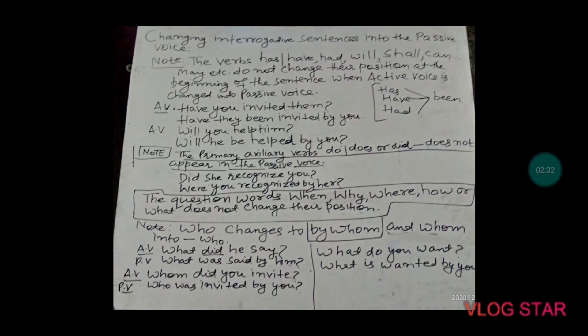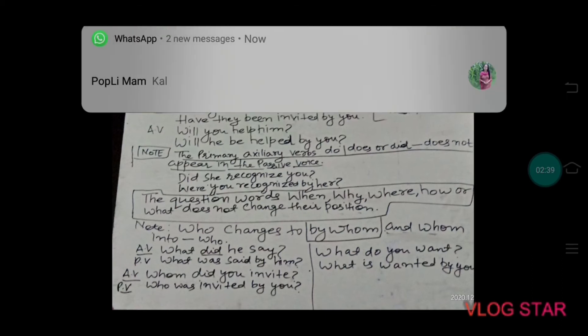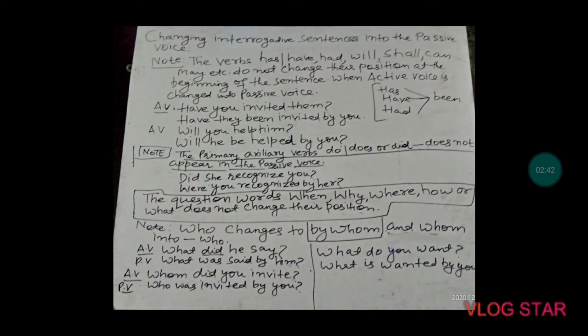The primary auxiliary verbs — do, does, and did — do not appear in the passive voice. If our sentence starts with 'did', 'do', or 'does', unlike 'have/has/had' which retain their position, do/does/did are removed when converting to passive voice.